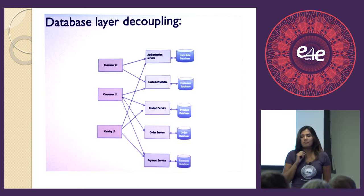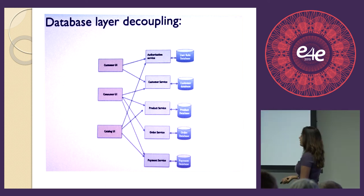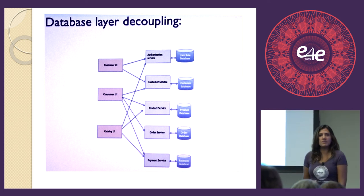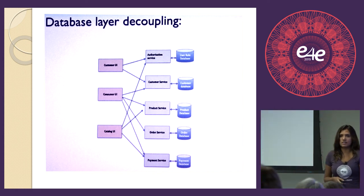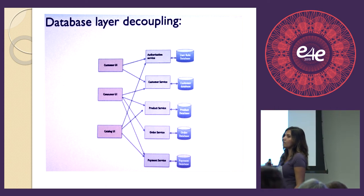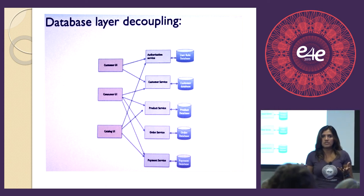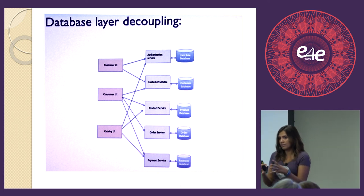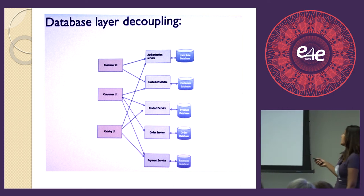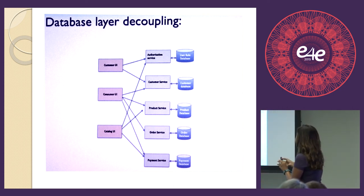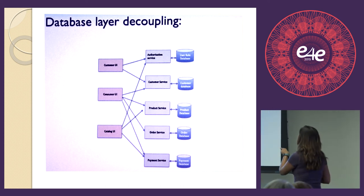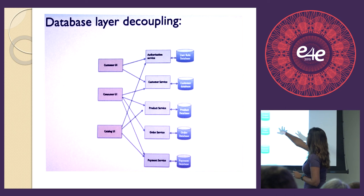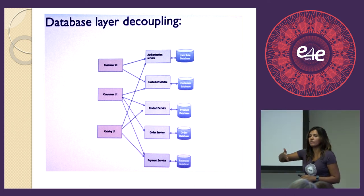One important point: many people think that if they are using REST services or SOAP services, they are using microservices architecture. That is not true. You can still have monolithic architecture and have all your functionality exposed as REST services. But only when each of your services has a separate database assigned to it are you truly using microservices architecture. Ideally you should never do joins across services, and never have more than one service talking to a given database. That is the best practice and guideline for designing microservice architecture.